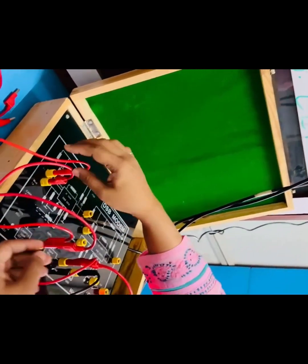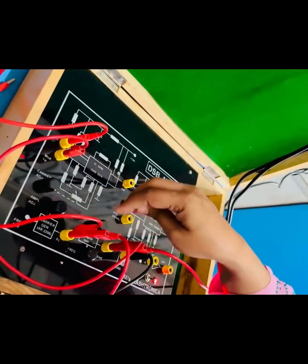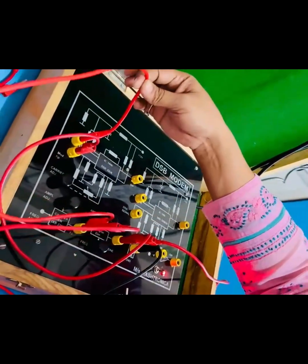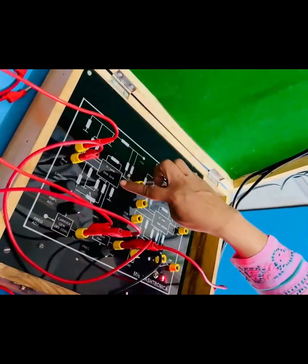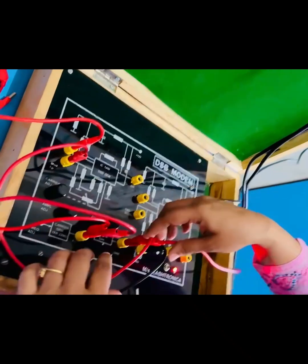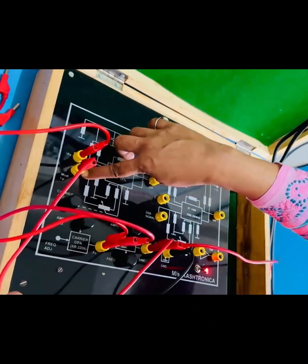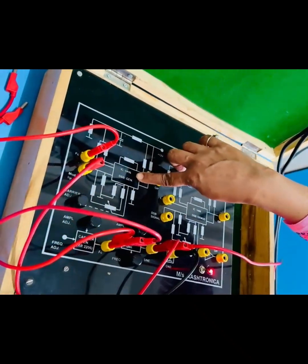After this we have applied the carrier signal to the FC input of DSB generator circuit and modulating signal to the modulating input of DSB generator circuit.